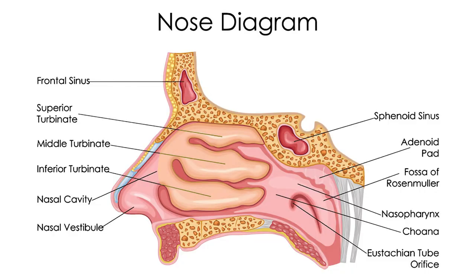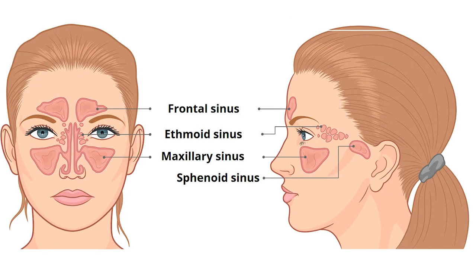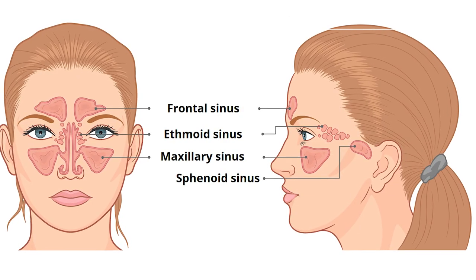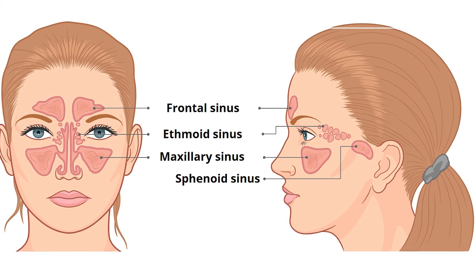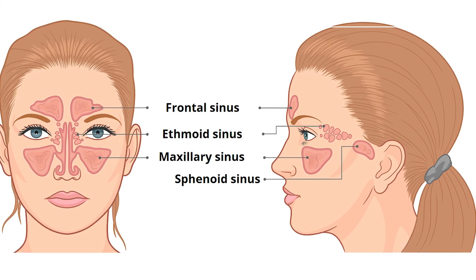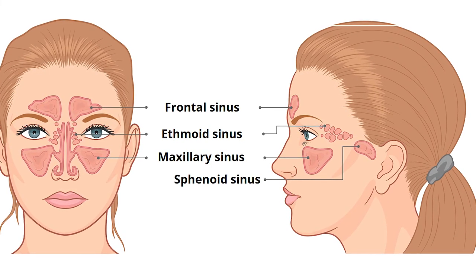Your nose has hairs that filter out different particles and dust, and it also has mucus with enzymes that will basically kill a lot of viruses and bacteria. Your nose also has these turbinates, which temper the air and make it closer to your body temperature so it's easier on your lungs. You also have these paranasal sinuses — and this is a big one — because anytime air passes through these paranasal sinuses, it will release nitric oxide.